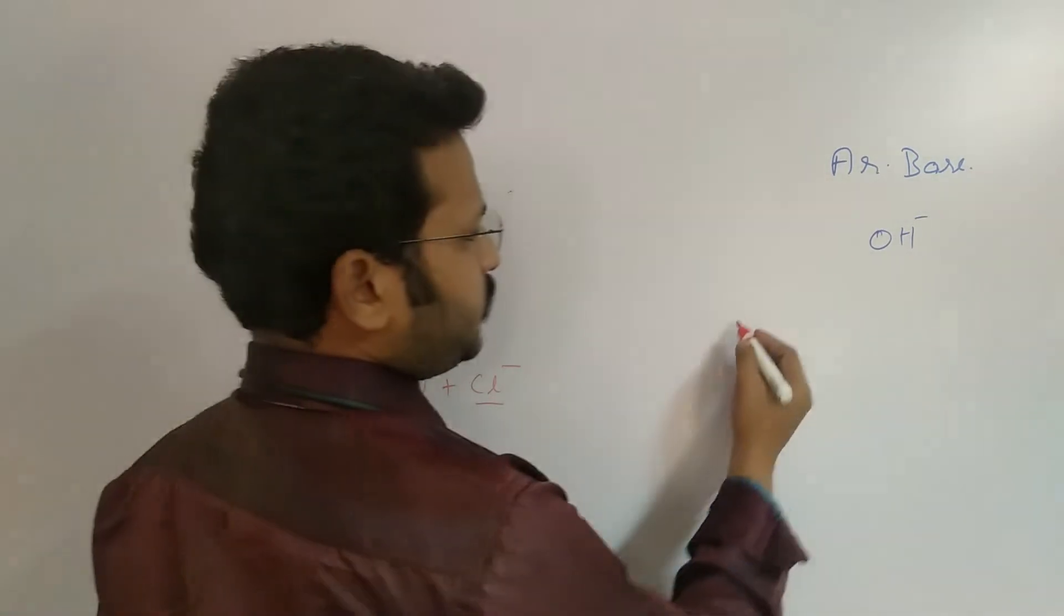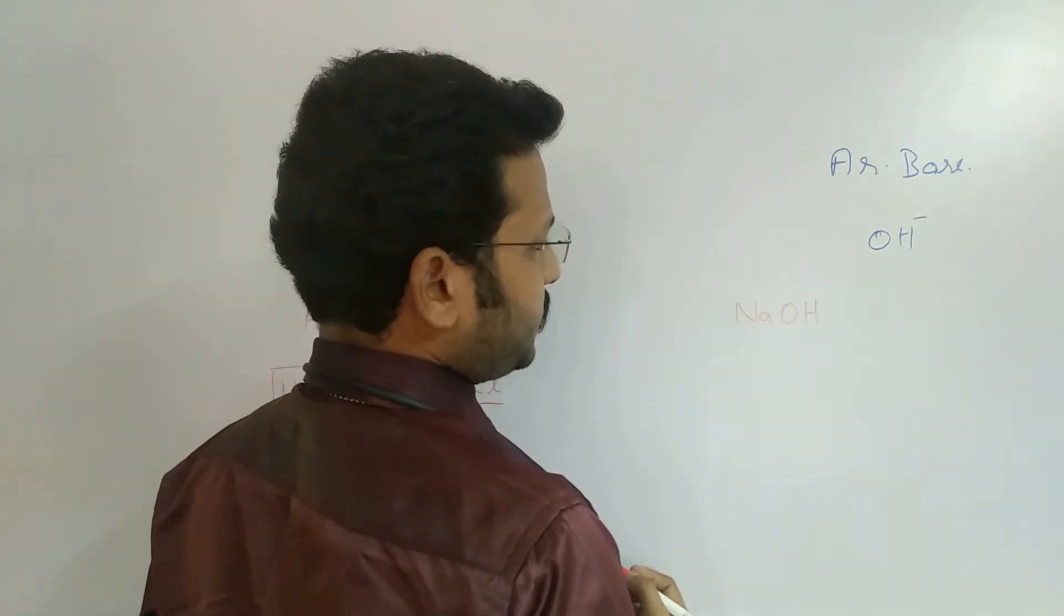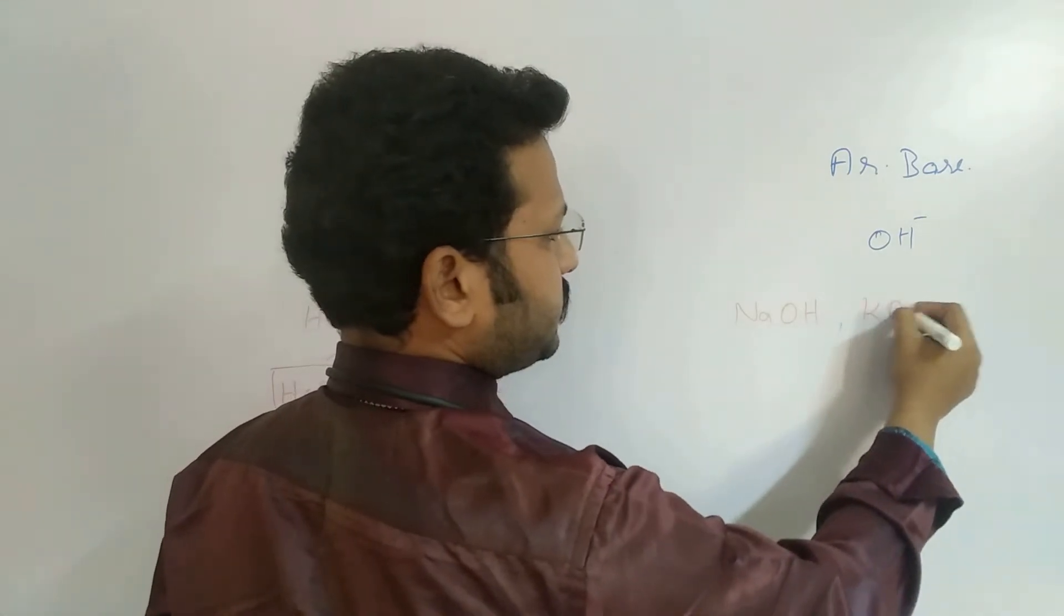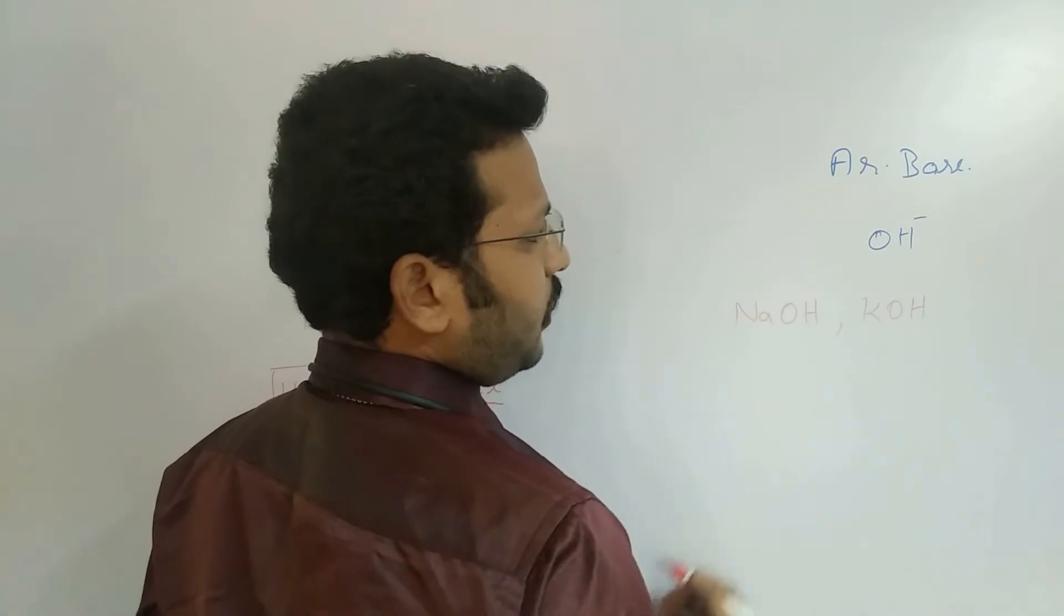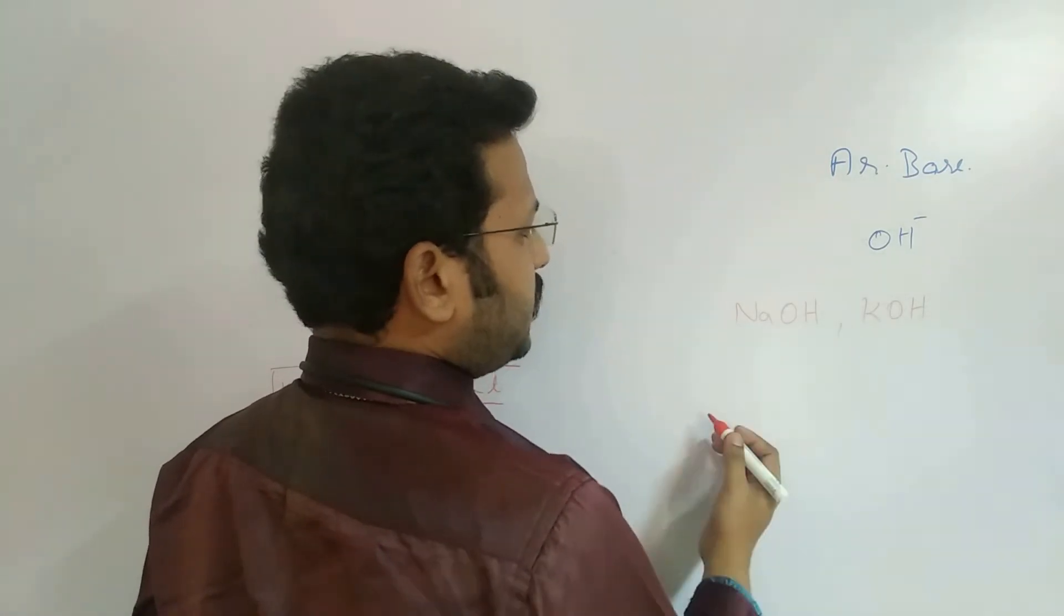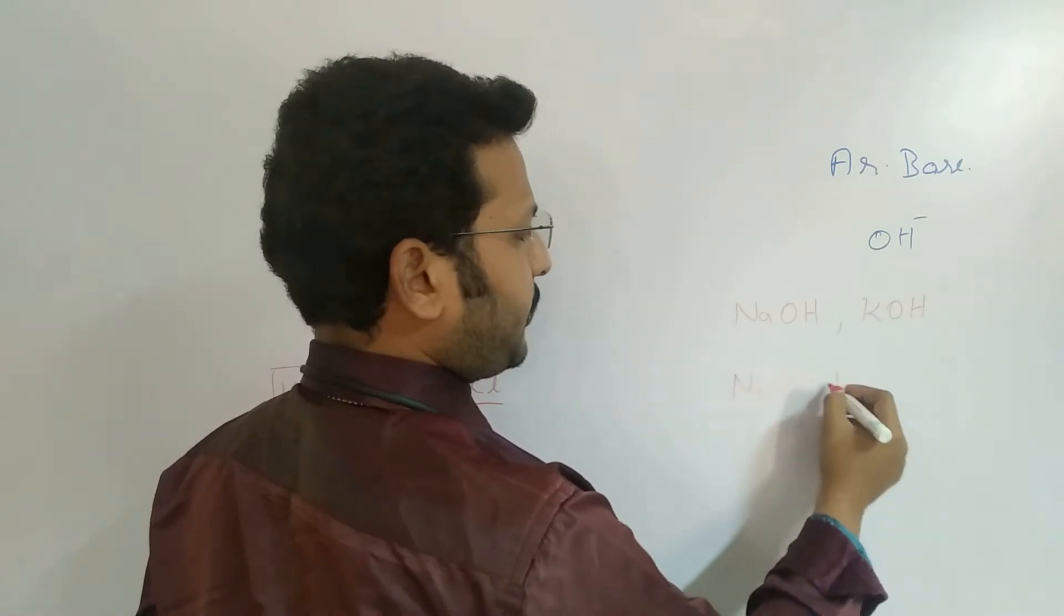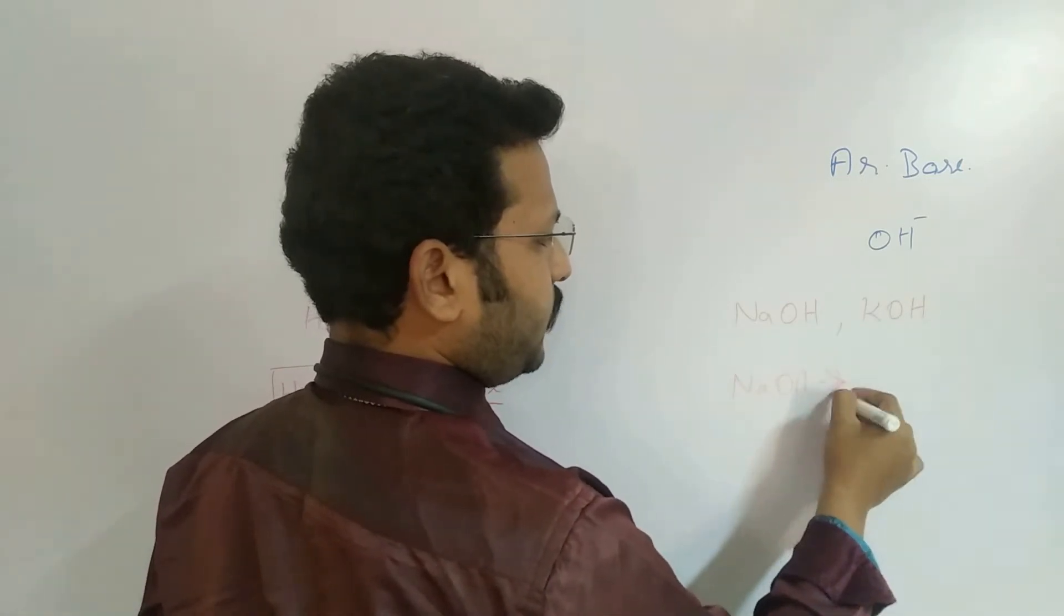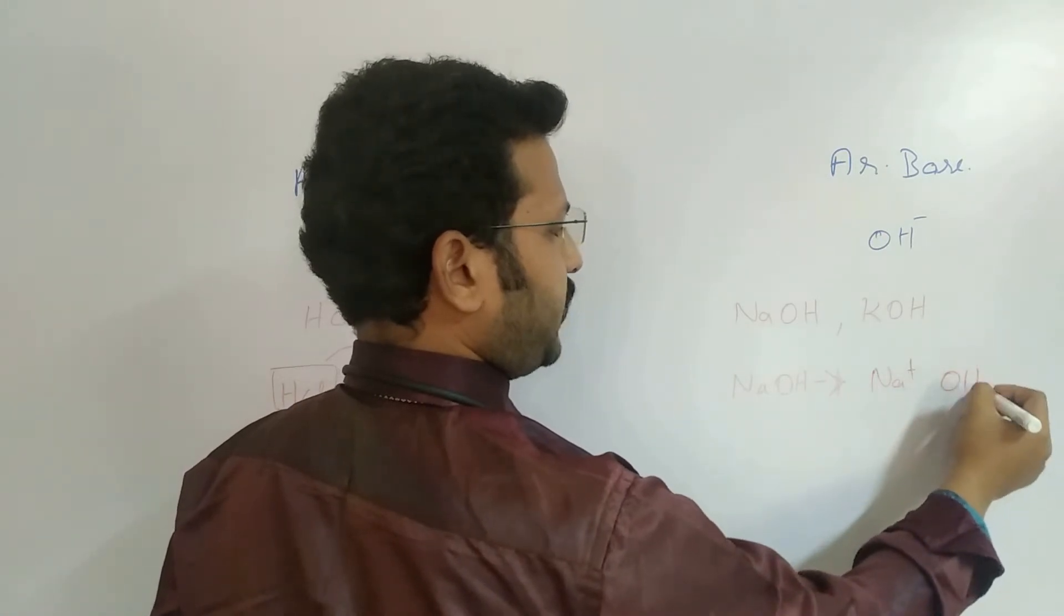And a compound which donates OH minus. For example, I will take any alkali, NaOH or KOH or any alkali hydroxides. If you are taking this NaOH, when it is dissolved in water, this NaOH will give Na plus ion as well as OH minus ion.